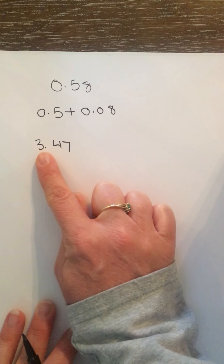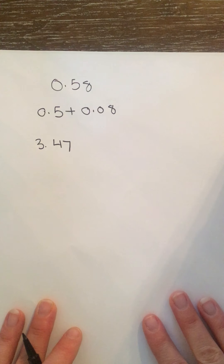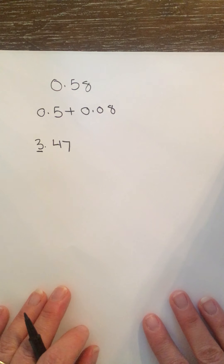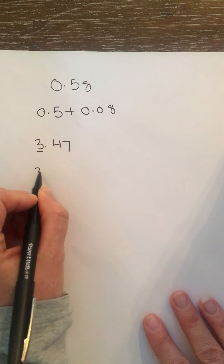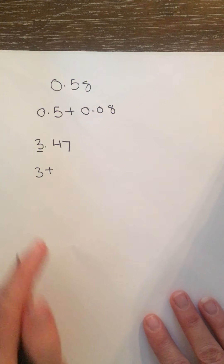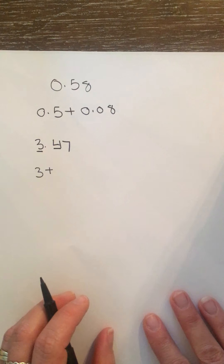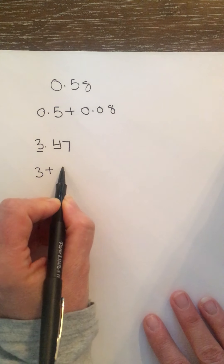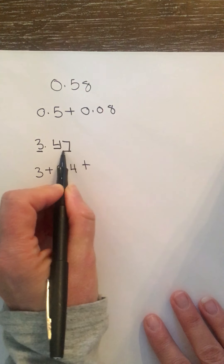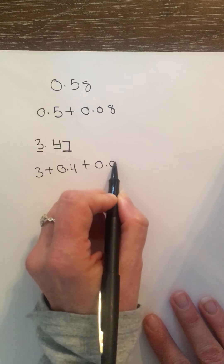Here I have this number. The way I would say it is 'three and forty-seven hundredths,' but I want you to write it in expanded form. I'm going to start with my first digit — I know the three is in the ones place, so three times one is three; it stays as three. Then I put a plus sign and go to my next digit, which is in the tenths place. There are four of them, so four tenths would be written as 0.4. Then I go to my hundredths — there are seven, so seven hundredths is written as 0.07.